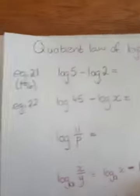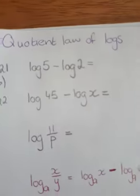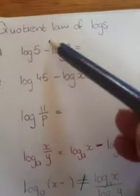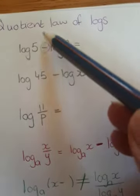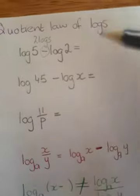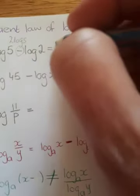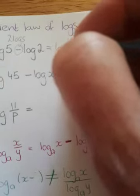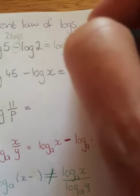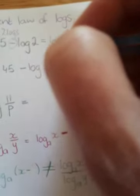When we look at examples, this is really quite simple if you understood the product law. Now we have a difference of two logs, and that equals the quotient log. So that is then the log of 5 divided by 2, which gives me a log of 2.5.